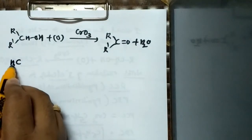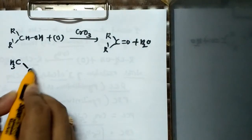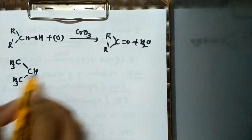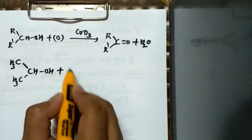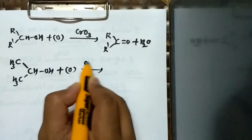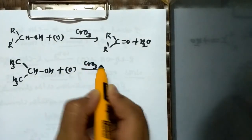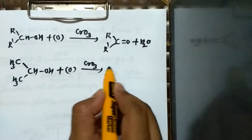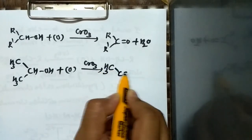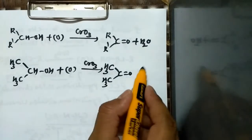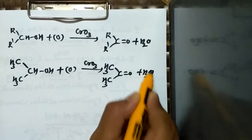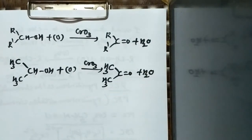For example, taking CH₃CHOHCH₃, which is 2-propanol, when this 2-propanol is subjected to oxidation using chromium 6 oxide, the reaction ends at the ketone intermediate — which is acetone — along with the formation of a water molecule. This is how secondary alcohols undergo oxidation.